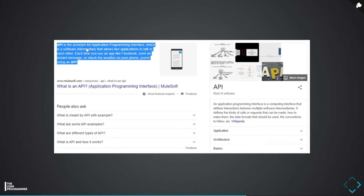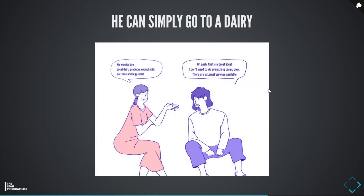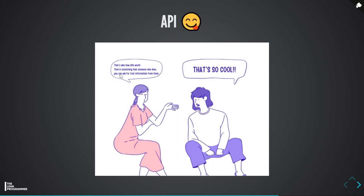Here's a simple example of what an API is. Let's say Jimmy needs milk but doesn't have a cow — Jimmy is very sad. Jennifer comes into the picture and says, 'No worries, the local dairy produces enough milk, go there and buy some.' Jimmy thinks, 'That's a great idea! I don't need my own cow, I can go to the nearby shop and buy milk. I don't need to own everything myself — there are external services that can help me get what I want.' The same thing applies to APIs.